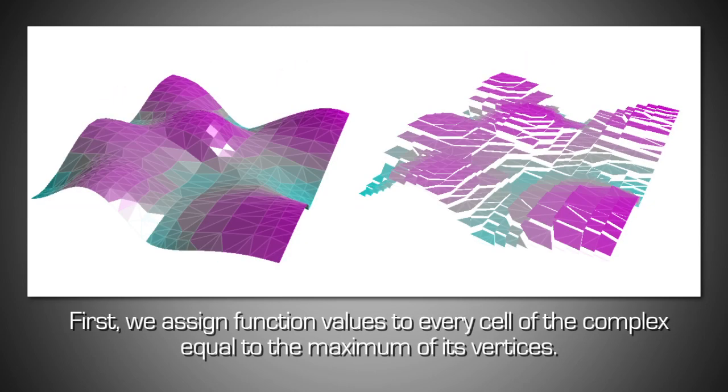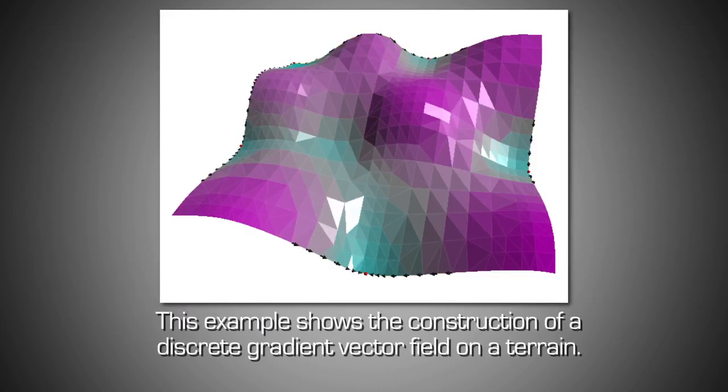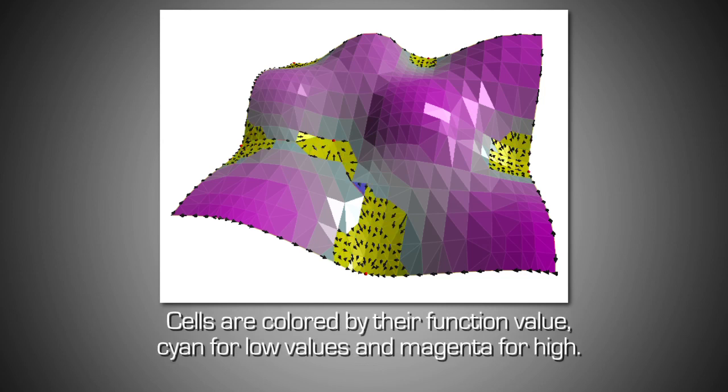First we assign function values to every cell of the complex equal to the maximum of its vertices. This example shows the construction of a discrete gradient vector field on a terrain. Cells are colored by their function value, cyan for low values and magenta for high.